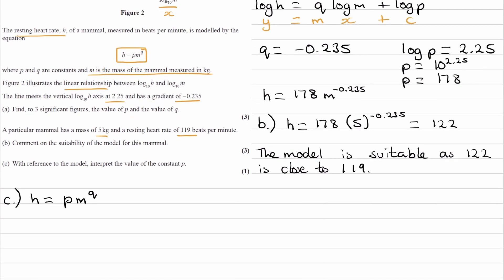So h would be equal to p when m is equal to 1, not 0. So if m was 0, the whole thing is 0. So if m is equal to 1, then h will be equal to p times 1 to the power of some number. 1 to the power of anything is just 1. So h will then be equal to p. So what does this mean? How can we interpret this? Well, it basically means that when you have a mammal which has a mass of 1 kilogram, then the resting heart rate h will be equal to p.